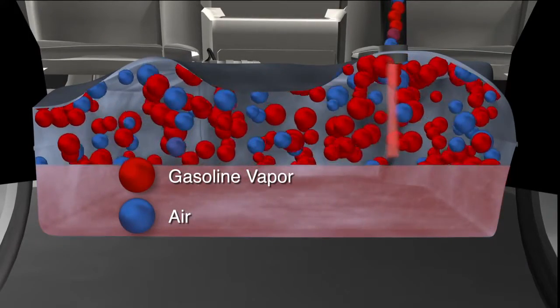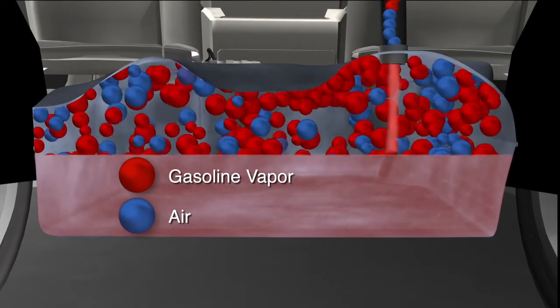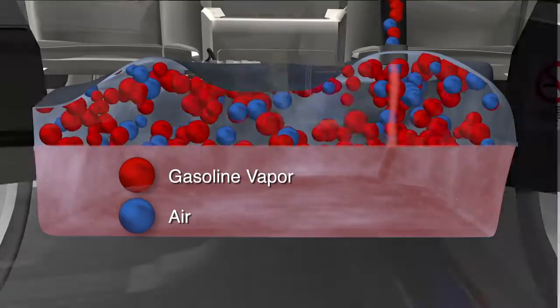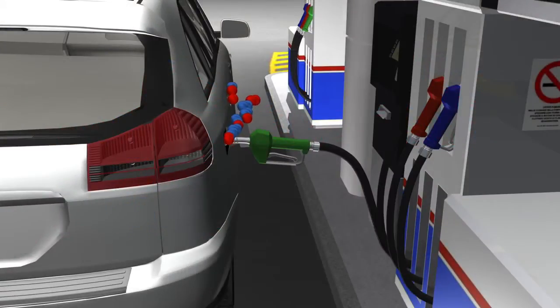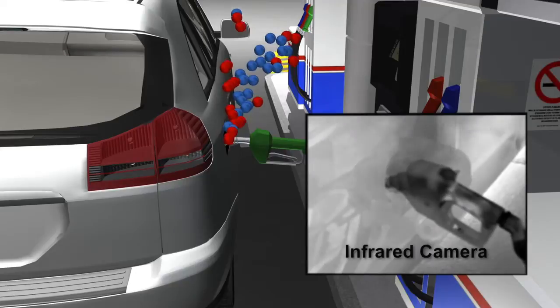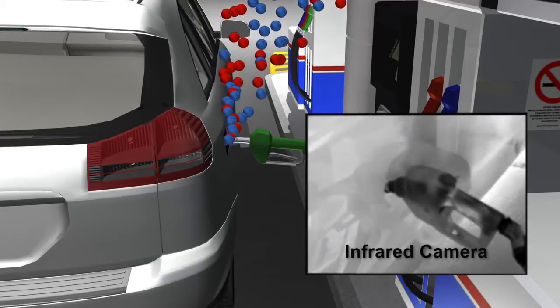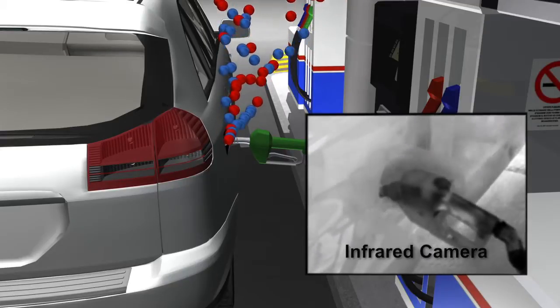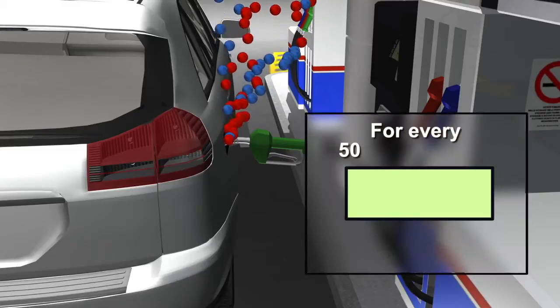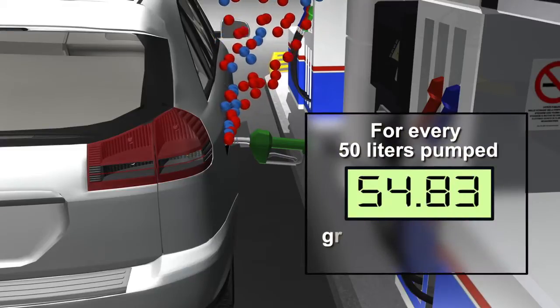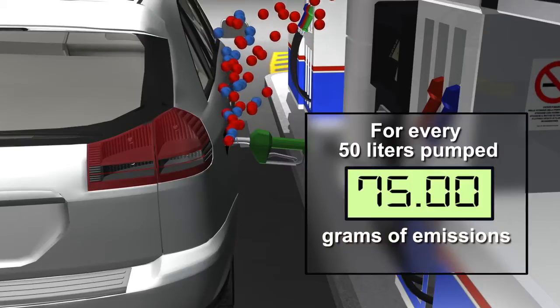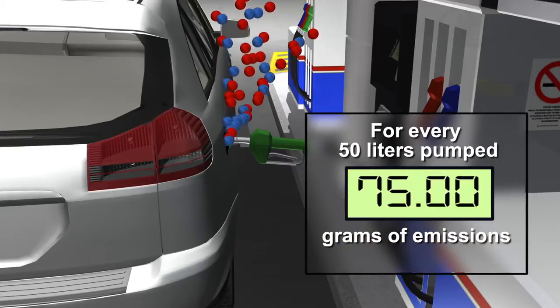As the vehicle tank fills, a mixture of air and gasoline vapor in the tank headspace is forced out of the filler neck. This image, shot with an infrared camera, shows vapor escaping from a vehicle tank during uncontrolled refueling. For every 50 liters pumped, 75 grams of harmful VOC emissions escape into the atmosphere.